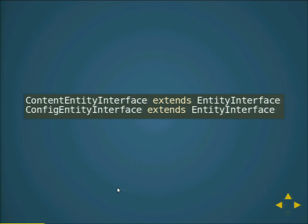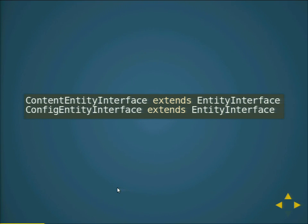We really have two flavors of entities: content entities and config entities. They're all based on a common interface and common Entity API, but then we have some extensions which are specific — some only for content entities or only for configuration entities.